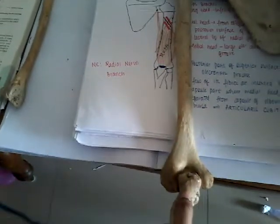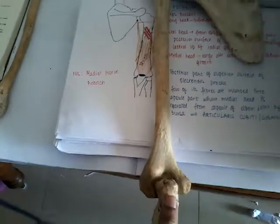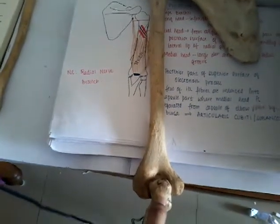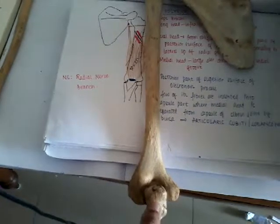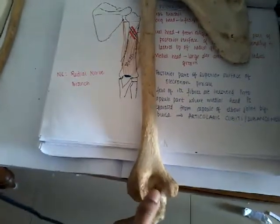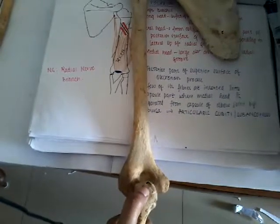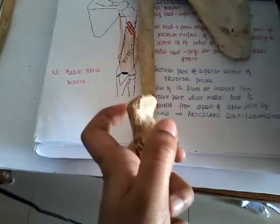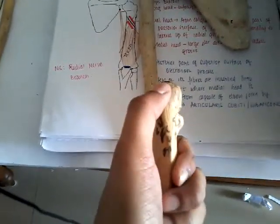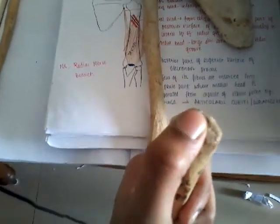All the muscle fibers come down and get inserted into the posterior part of the olecranon fossa — this is the posterior surface of the olecranon fossa. The insertion is at the posterior part of the superior surface of the olecranon process, so it gets inserted over the olecranon process. This is the olecranon process, and this is the coronoid process. Posteriorly, this is the olecranon process, so the insertion is somewhere here.